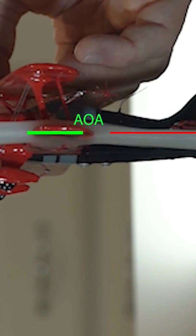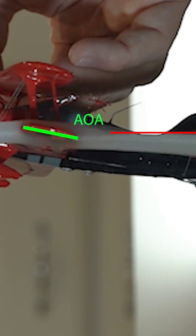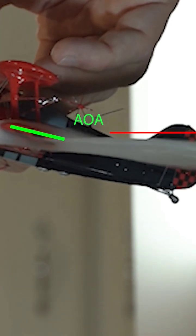As I start to increase angle of attack, you'll notice the flow of fluid, its laminar flow over the wing, is being redirected downward. And that's how lift is created.